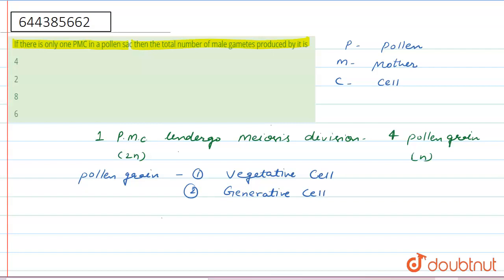So we can see that the pollen grain undergoes division in the generative cell and forms, one pollen grain forms two male gametes. So one pollen grain forms two male gametes.